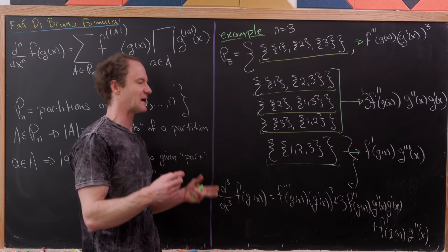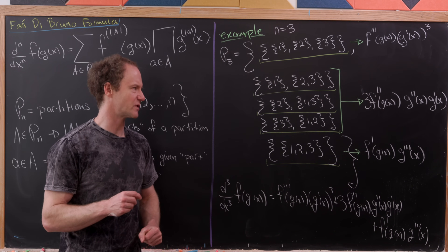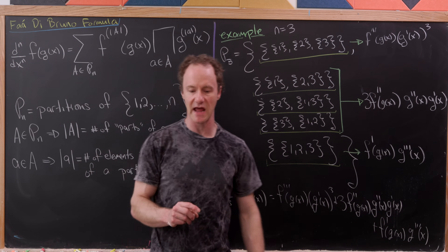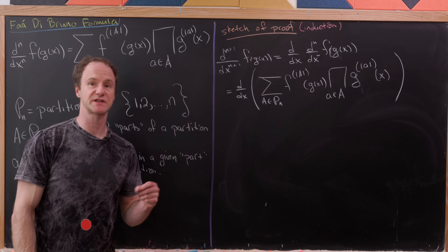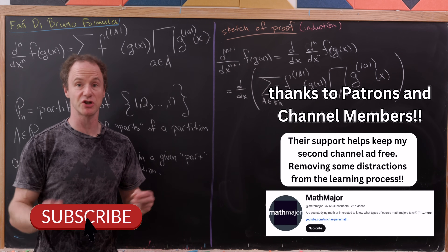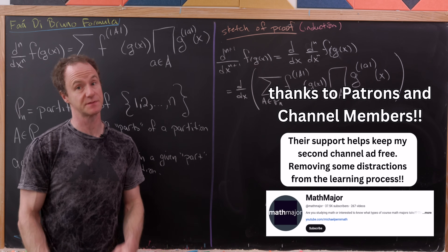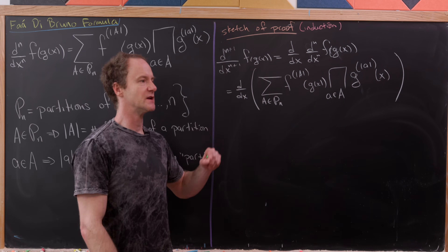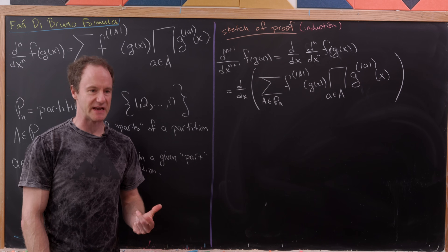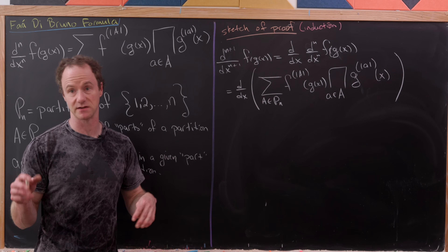And you can check that just by taking the derivative a few times. So now we've done this example which hopefully sheds some light on how the formula works. Now let's sketch a proof. Our proof will be via induction, which means we need a base case, but the base case is simply the normal chain rule, so we'll just take that as a fact.